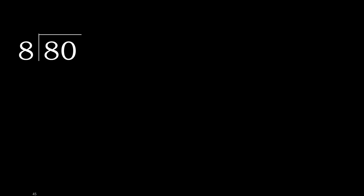80 divided by 8. 8 is not less, therefore we work with 8. Here, 8 multiplied by which number is nearest to 8 but not greater? 8 multiplied by 2 is 16, which is greater. 8 multiplied by 1 is 8, which is not greater.